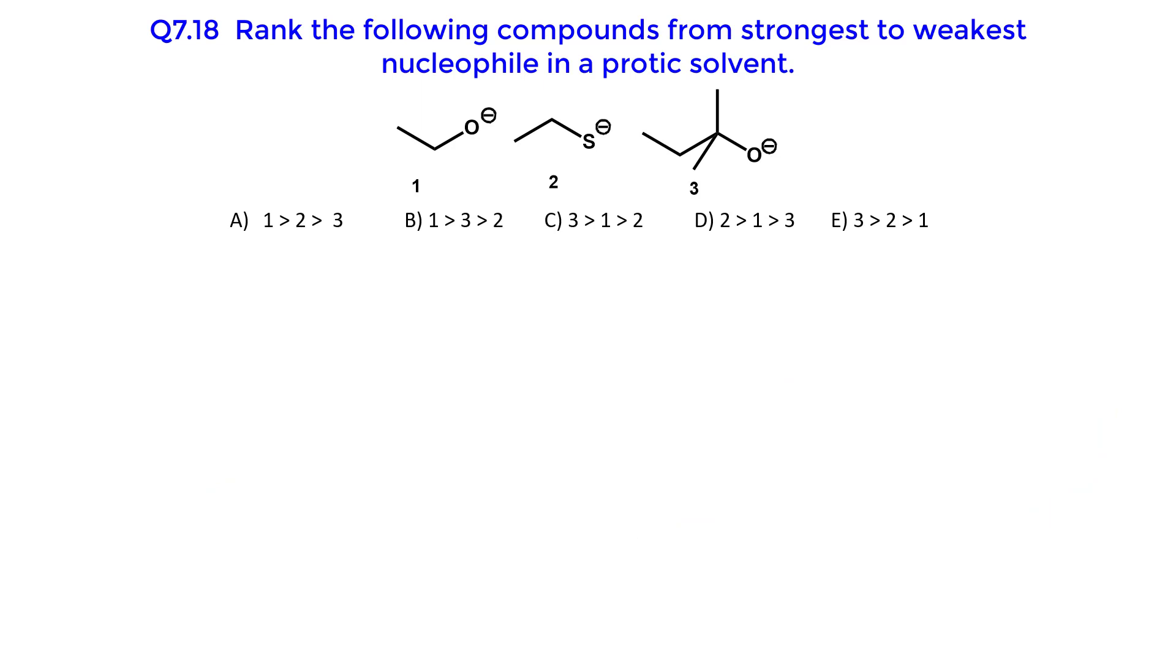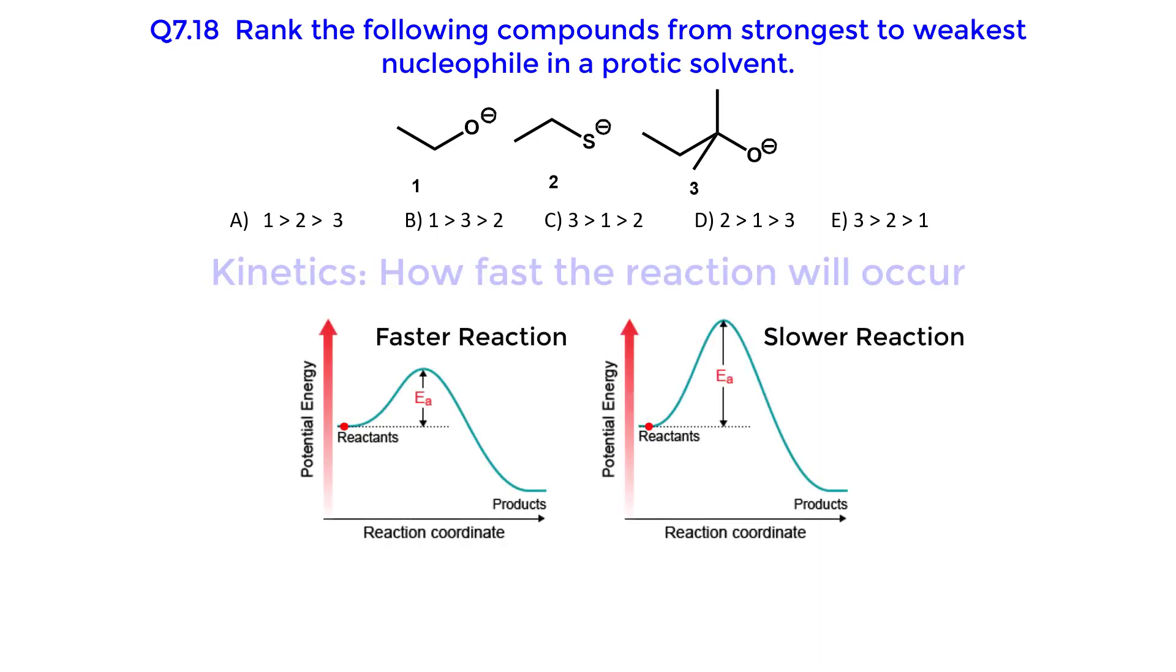Rank the compounds from strongest to weakest nucleophile in a protic solvent. Nucleophilicity is a kinetic property, which means we are looking at how fast the reaction will occur. It does not tell you how much product is produced, or how far the equilibrium is shifted to the products.